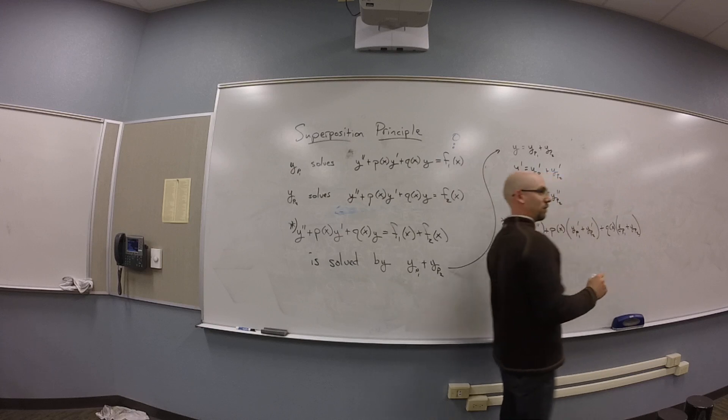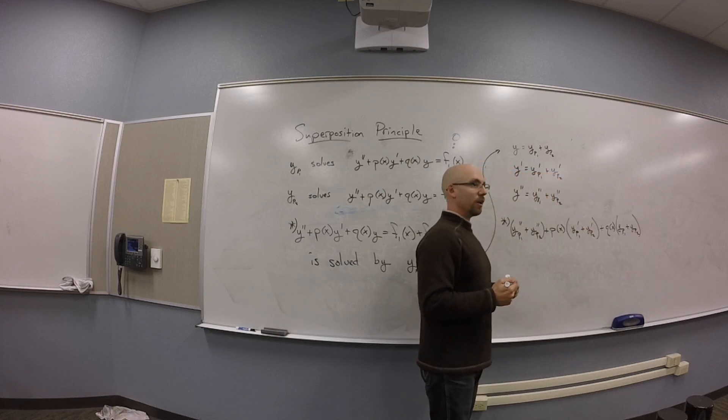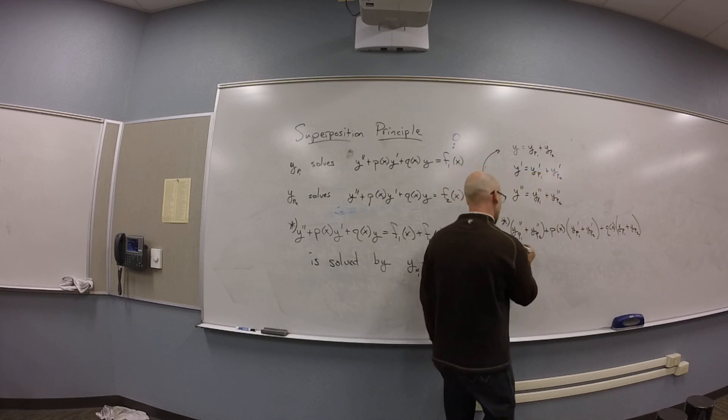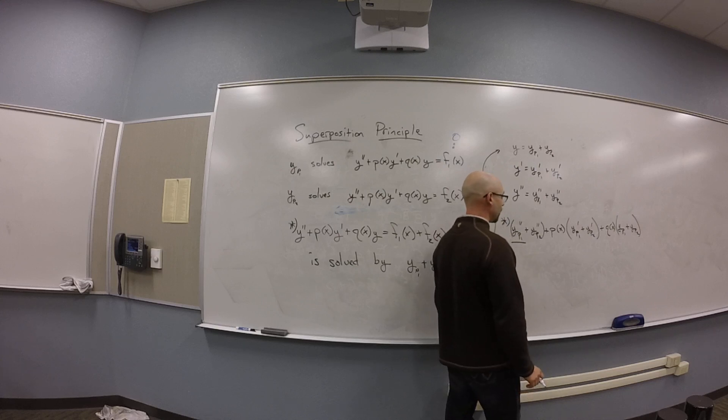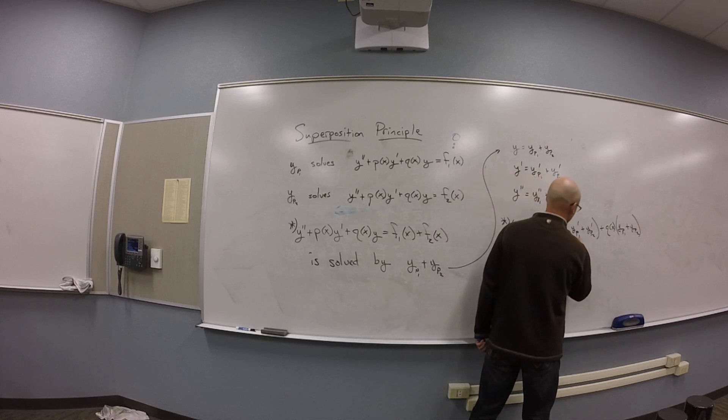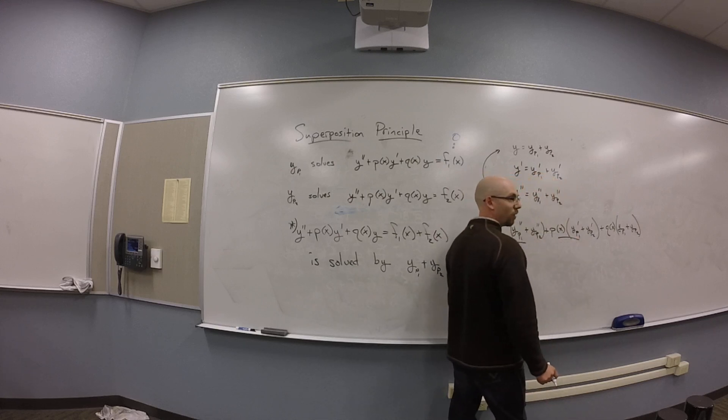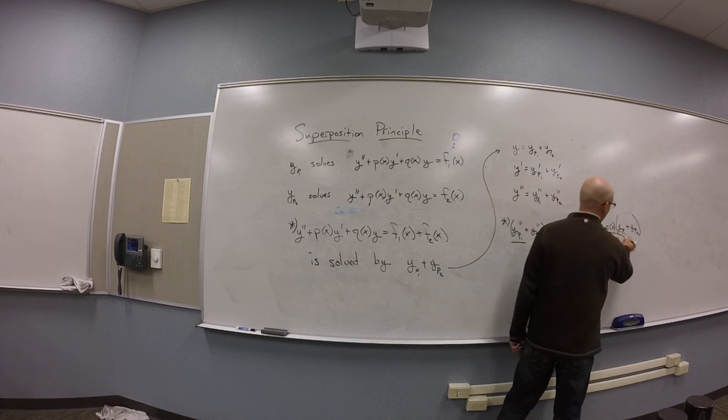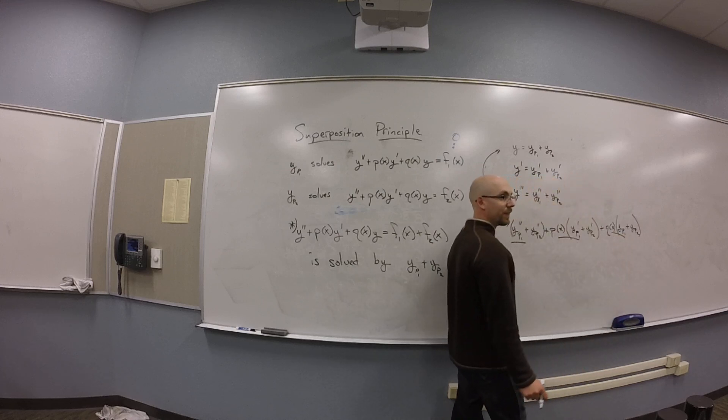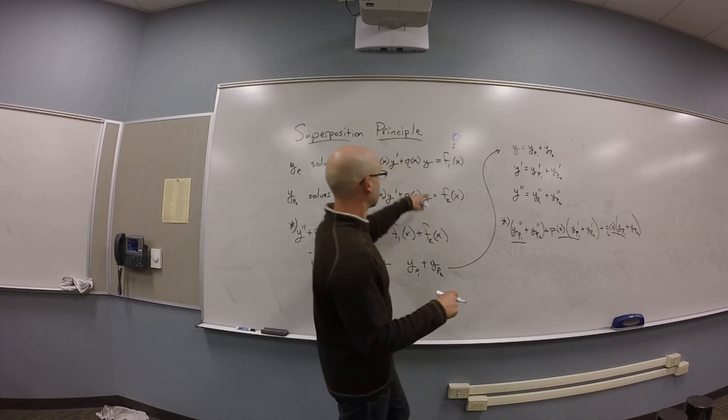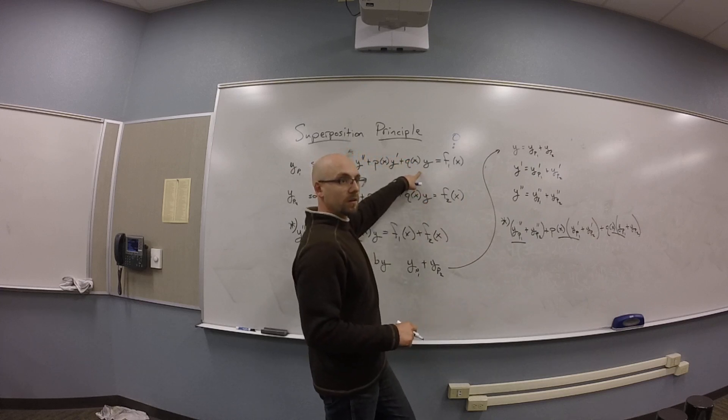And then you can just distribute it and associate it. Yeah, and then you might notice this yp1 double prime and this p of x yp1 prime and this q of x yp1, that's that first equation, right?